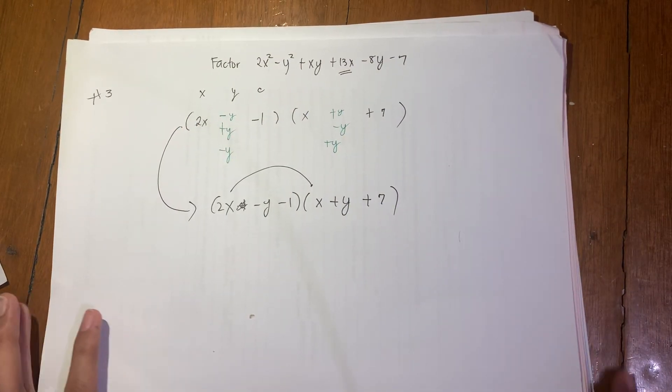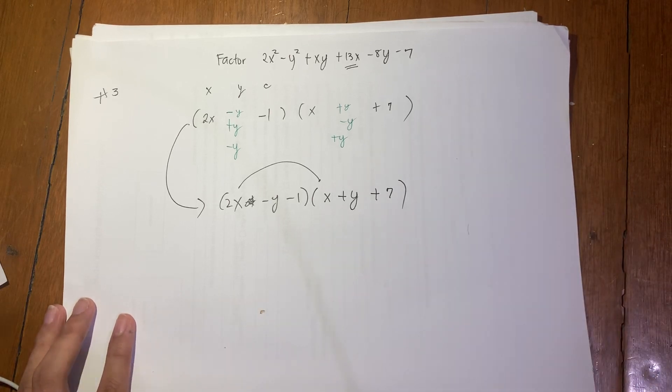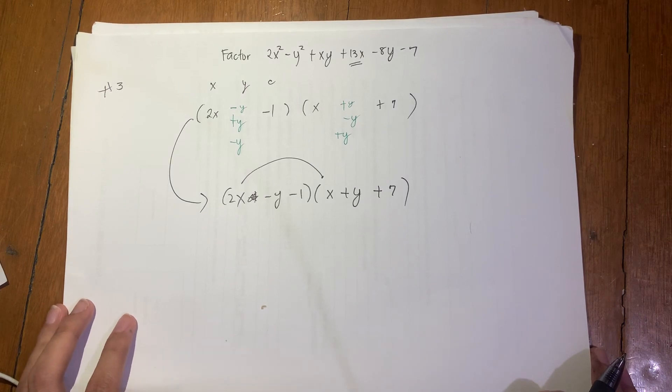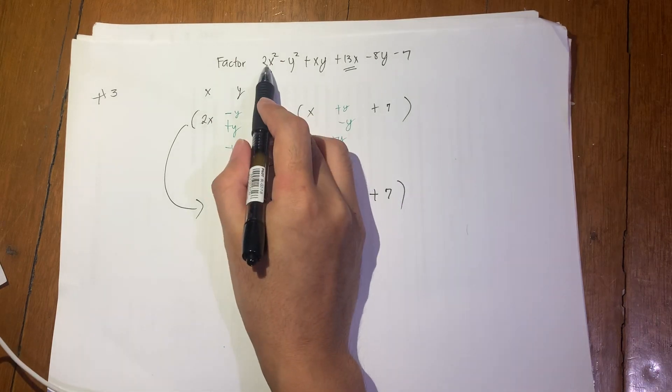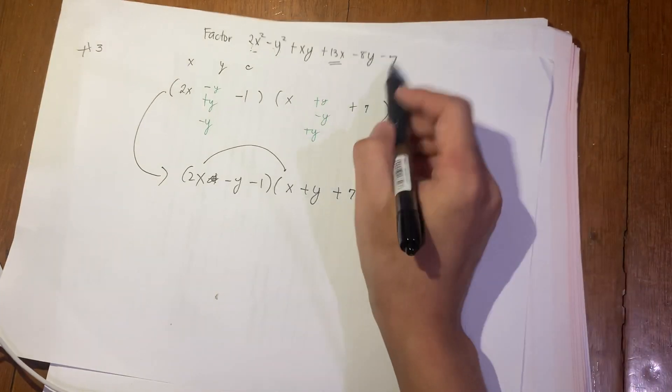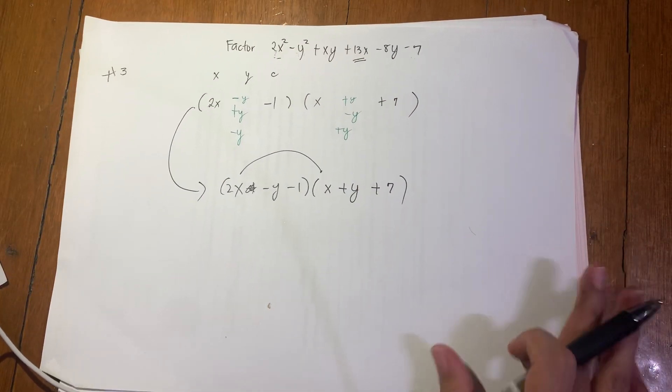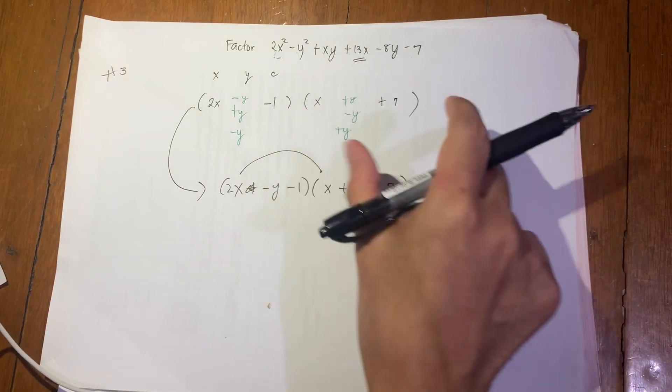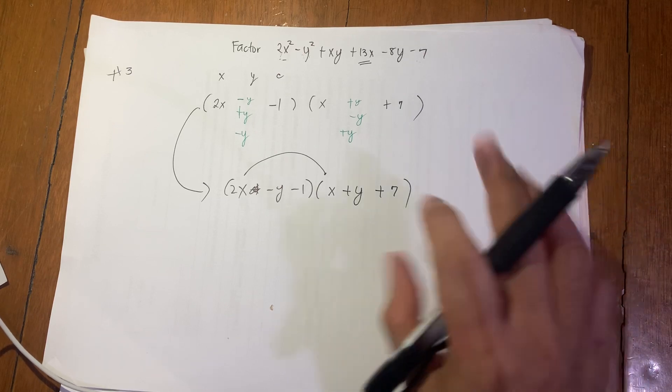So the coefficient here should be negative y, and here positive y. So we get (2x - y - 1)(x + y + 7). Let's try distributing it to verify. So is this method good? Yes, for this example very much so. The problem with this method is when there are many combinations of x and y that can be used. This happened to be 2x and x, negative y and positive y, negative 7 and positive 1 or the other way around. When there are more combinations, this method becomes messier and you might take longer than using methods 1 and 2.